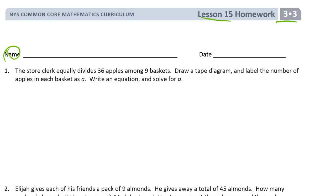The store clerk equally divides 36 apples among 9 baskets. Draw a tape diagram and label the number of apples in each basket as A. Write an equation and solve for A. So we have to write an equation, solve for A, label, and draw a tape diagram. So here we go.